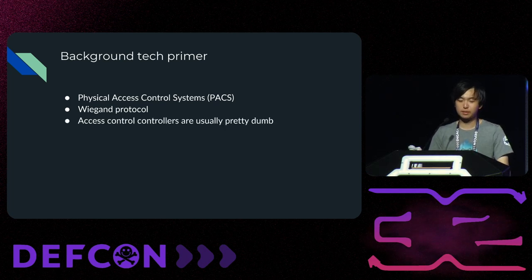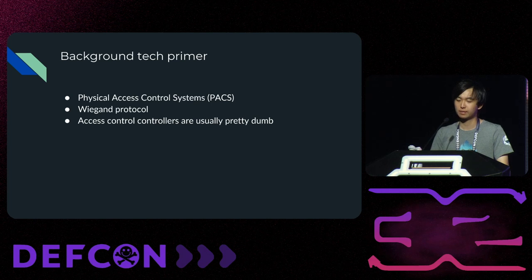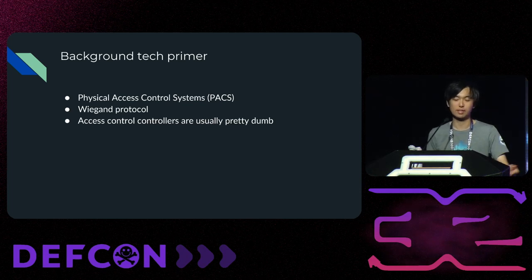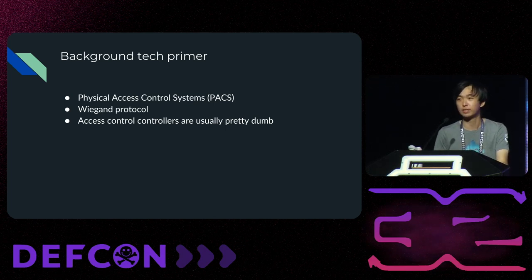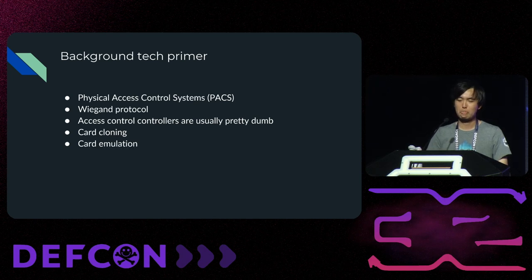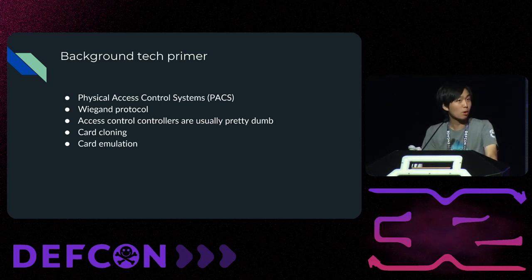Access control controllers are pretty dumb — they can't tell what type of credential is presented for the most part. In the case of iClass, it is going to read any credential that has the same key, and we know the cards have the same key for the most part. It's up to the controller to determine whether to allow or deny access. Card cloning is just making a physical copy of a credential onto another credential — a direct copy. Card emulation is making a digital copy of a physical credential and emulating it with a device like a Proxmark 3 or a Flipper Zero.